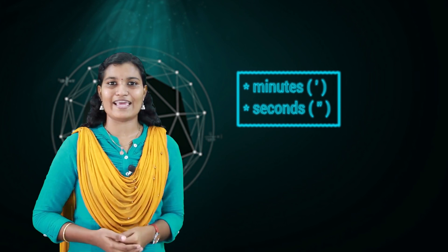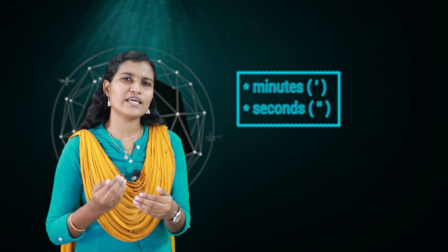The degree is a familiar angle measurement unit. Just as distance has smaller units like meters and centimeters, the degree also has smaller units: minutes and seconds. One degree is divided into 60 equal parts; one part of that is called one minute. So 1 minute equals one-sixtieth of a degree, or equivalently 1 degree equals 60 minutes.